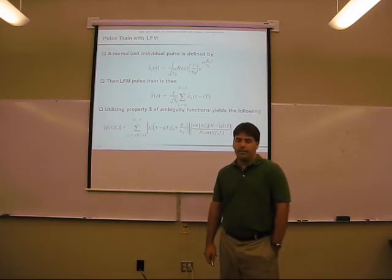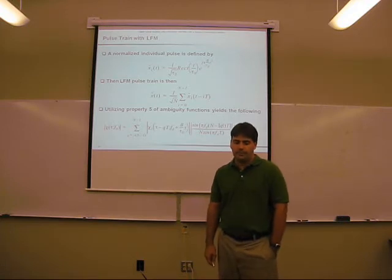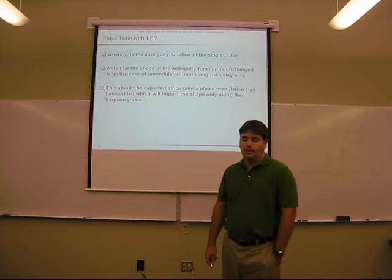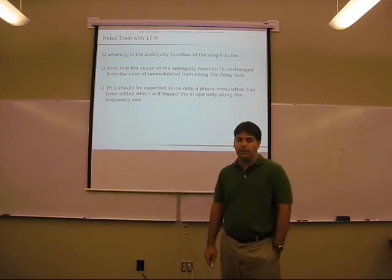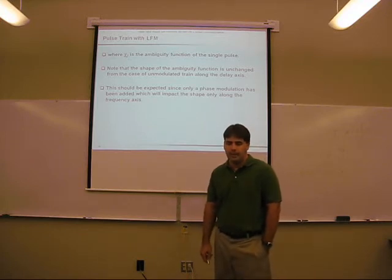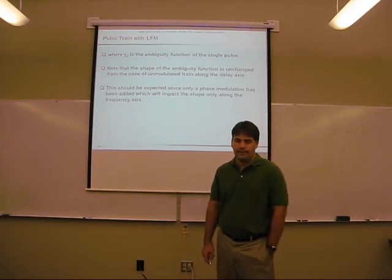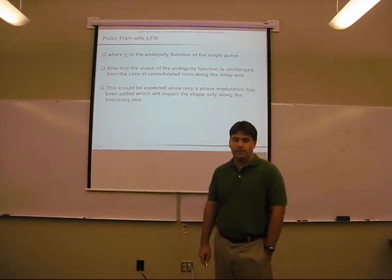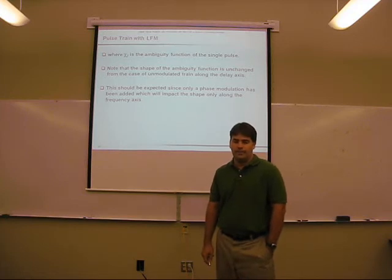We will utilize property five of the ambiguity function to yield the following output for the matched filter. Chi sub one is the ambiguity function for the single pulse. You will note that the shape of the ambiguity function is unchanged from the case of the unmodulated train along the time delay axis. This corresponds to the range axis. This is expected since only phase modulation has been added to this pulse. And this will affect the shape along the frequency axis.